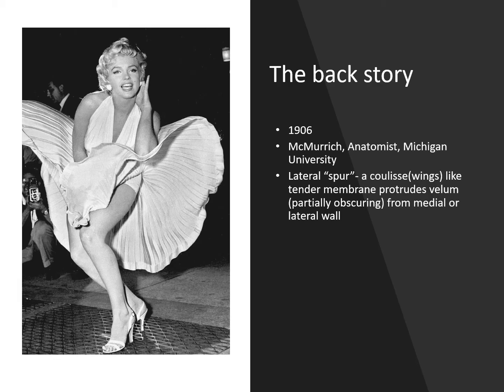Before we go any further, we actually have to go back in time even more. If you look at the original May-Thurner paper, one of their references is a paper written by McMurich, published in the British Medical Journal in 1906. McMurich was an anatomist from Michigan University, and in that original paper he described a lateral spur — a colossal, wing-like membrane that protruded or partially obstructed the medial or lateral wall of the iliac vein. Bringing the two eras together — 1906 and the 1950s — those wing-like projections looked a lot like Marilyn Monroe's famous dress.